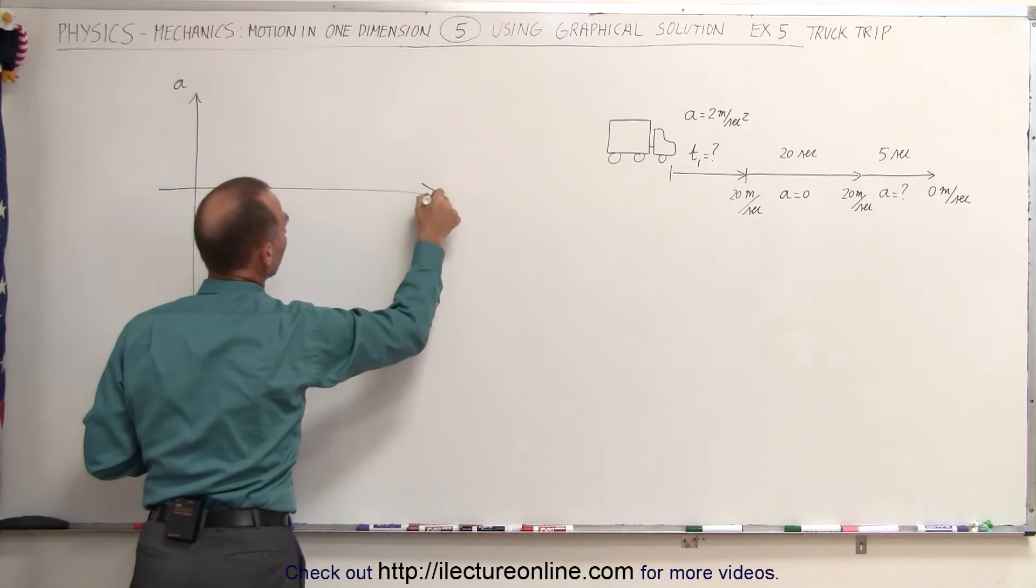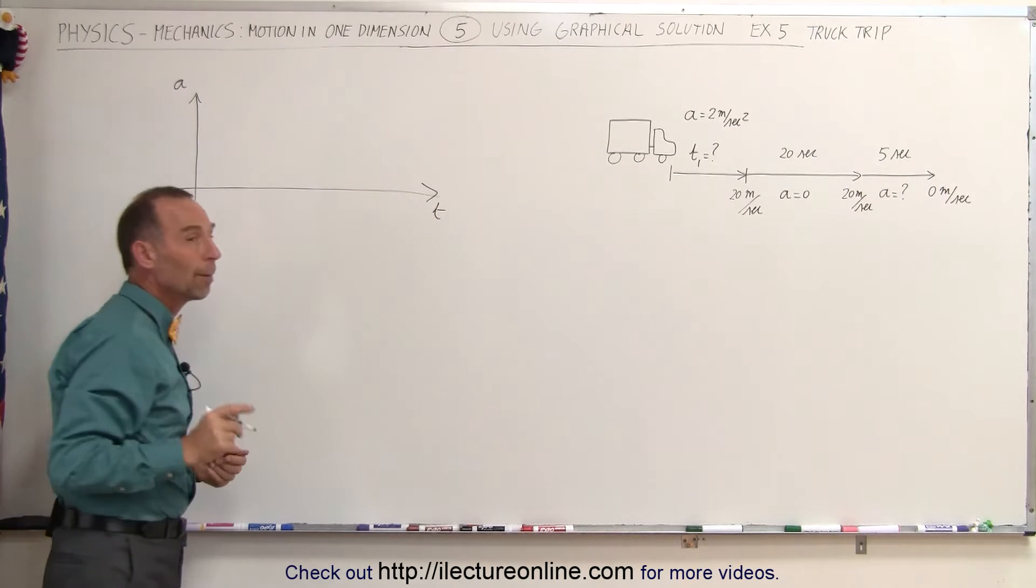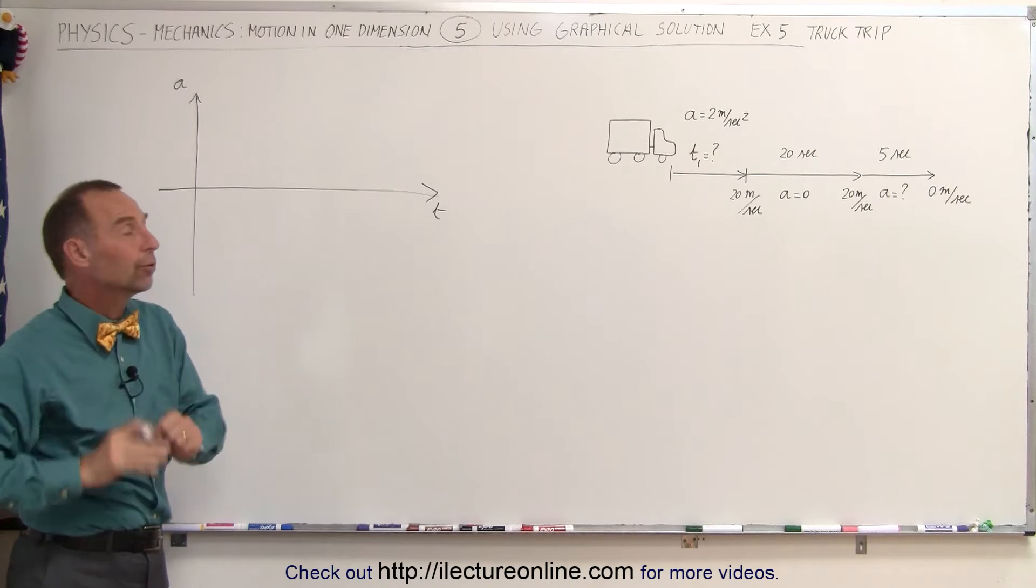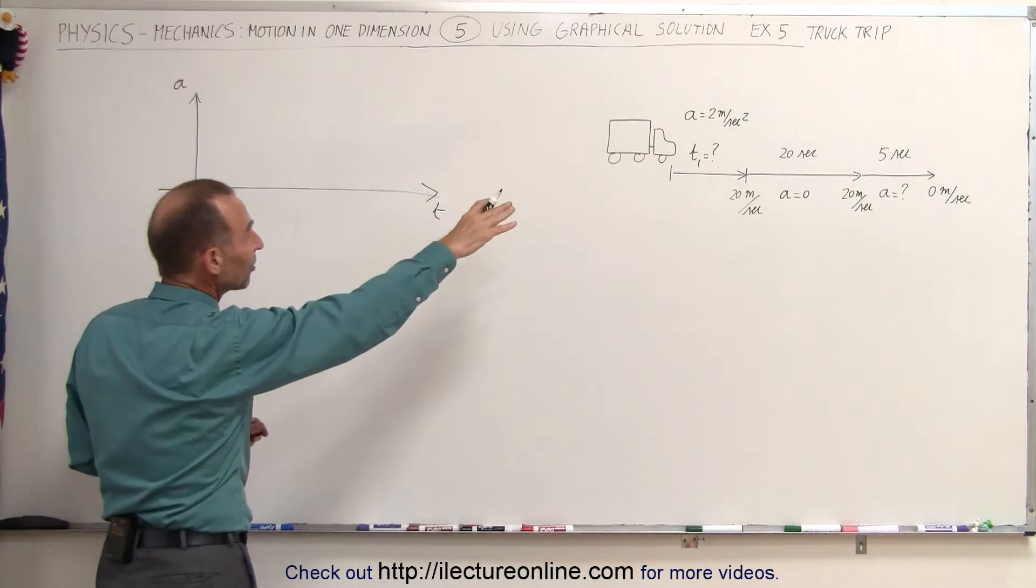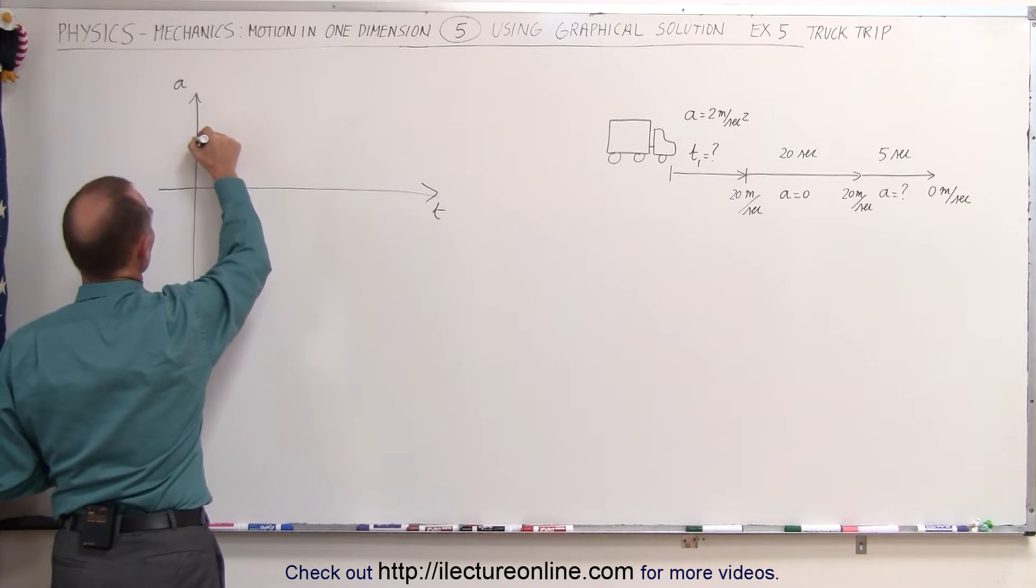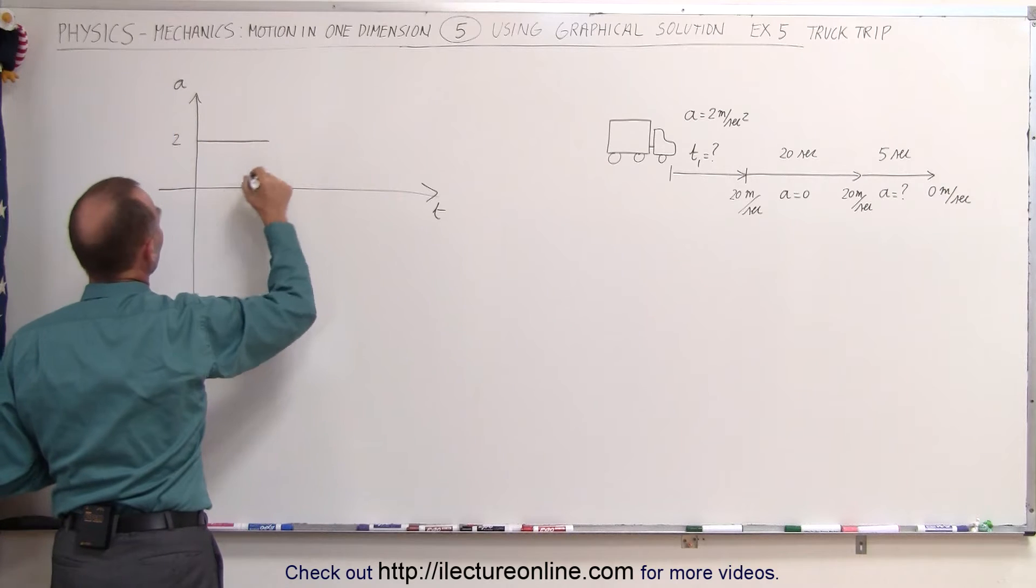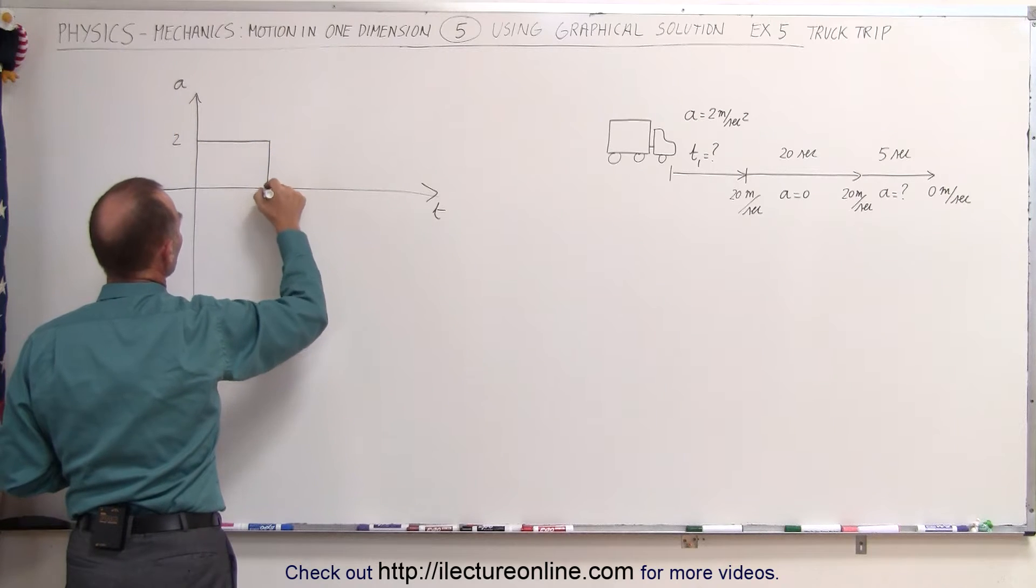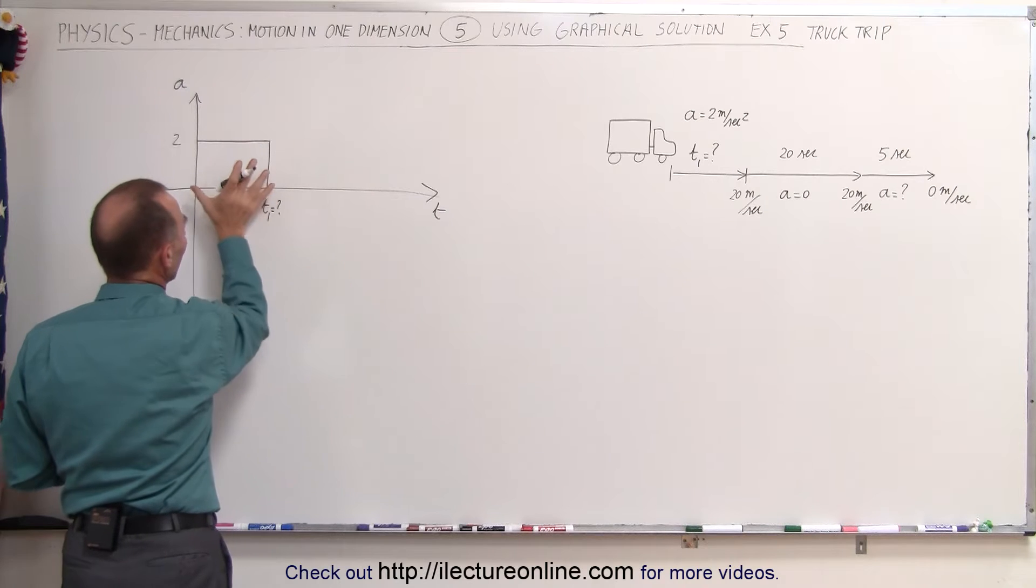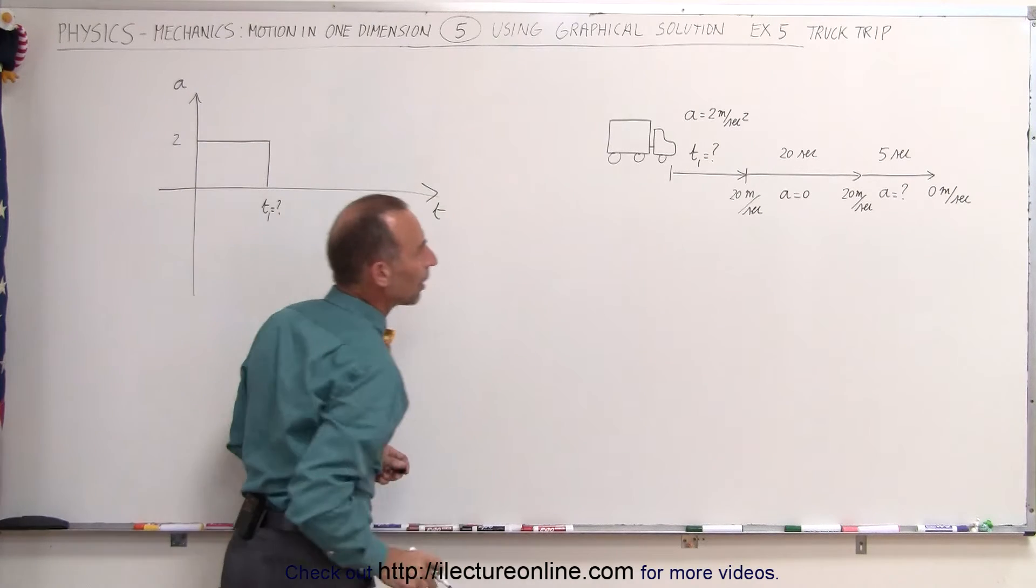There's acceleration, there's the time. Remember that the area underneath the acceleration versus time graph equals the velocity. So we have a constant acceleration at 2 meters per second squared for a certain amount of time. So there's 2 meters per second squared, and we don't know for how long so the time is unknown. So t1 equals unknown so I'll call this t1 for the first segment of the problem.